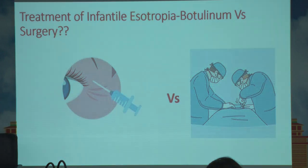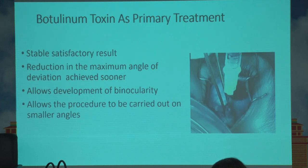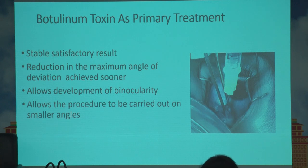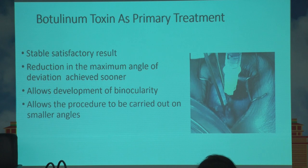The second controversy in infantile esotropia is whether to do surgery first or to use Botox — botulinum toxin — in this early period. Studies have shown botulinum toxin being used as a primary treatment with stable, satisfactory results. The degree of deviation is important in these cases. By giving some amount of Botox, we can reduce a large deviation to around 10 to 15 prism diopters of residual esotropia, which could help in achieving some binocularity.